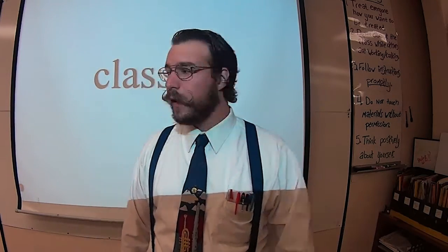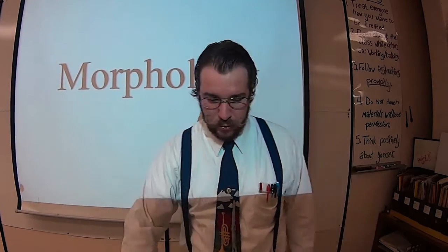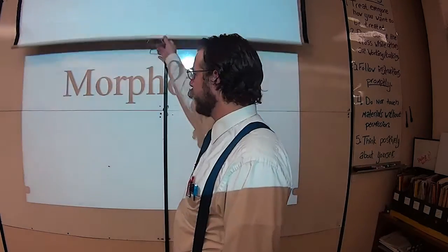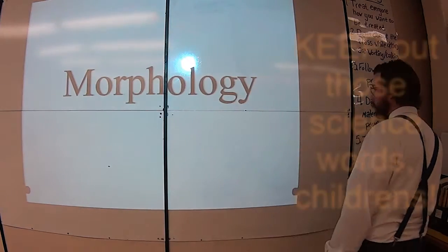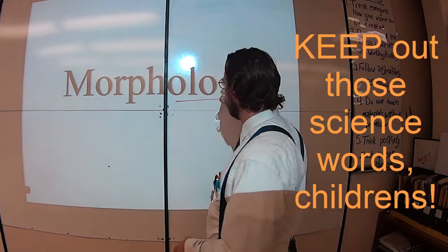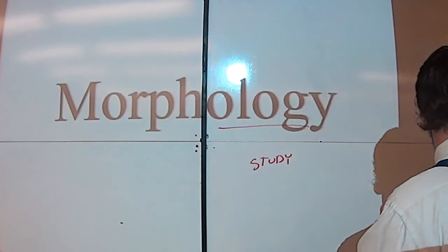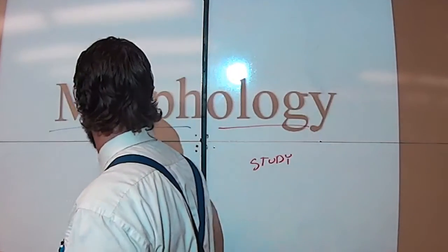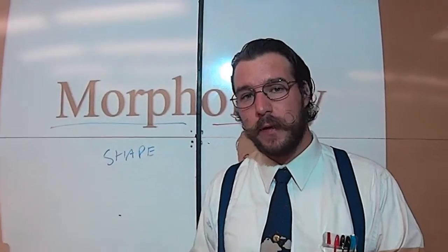The first one is morphology. Don't be scared about breaking out your science words for it. 'Ology' still means study. Morpho means shape, so morphology is a classification based solely on shape, which does have its limits.